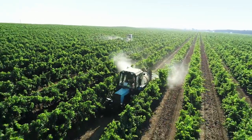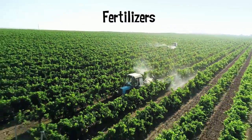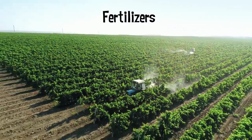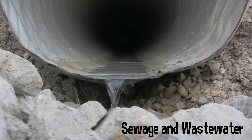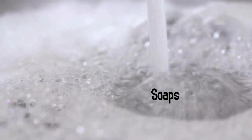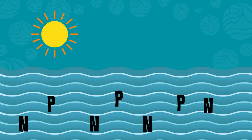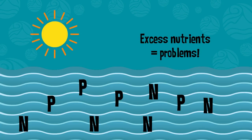Nutrients like nitrogen and phosphorus can often be found in fertilizers, sewage and wastewater, and even household products like detergents and soaps. When too much of these nutrients make their way into a water body and they are in excess of what naturally occurs, problems can arise.